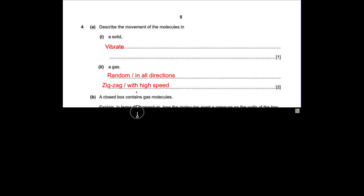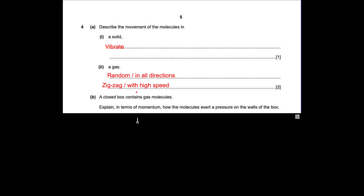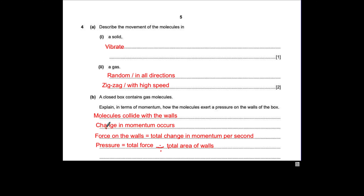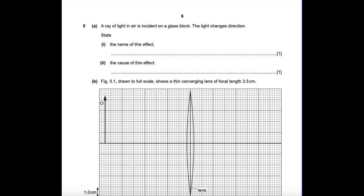A closed box contains gas molecules. Explain in terms of momentum how molecules exert a pressure on the walls of the box. The pressure is exerted on the inner walls of the box by collision between the molecules and the inner wall, and also collisions between the molecules with each other. Molecules collide with the walls and a change in momentum occurs. The force on the walls equals total change in momentum per second, and pressure equals total force divided by total area of the walls.